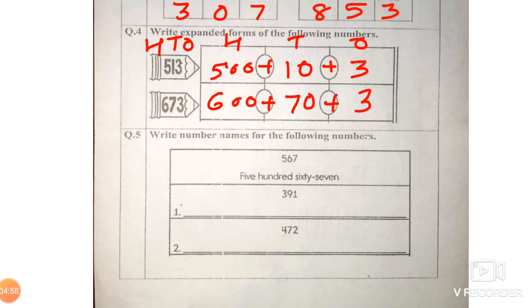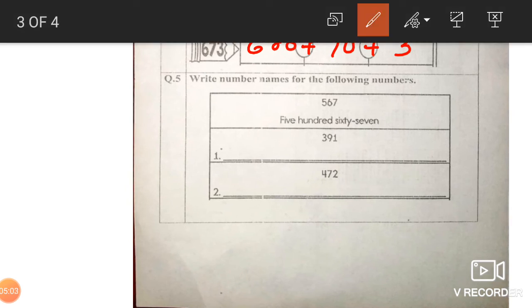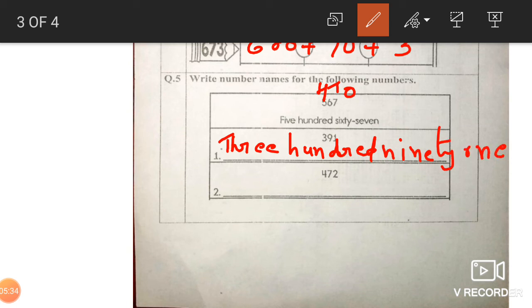This is the last exercise. Question number 5. It's a revision of whatever we have done beta. Okay. Number names for the following numbers. The first one. 5,167. This is why 500. Because 500's place mein hai. 5,100 and 67. Yaha pe kitna 100 hai? 300. So we'll write 3, T, H, R, E, E. 300. Kitna hai? 91. 91. T, H, R, E, E.